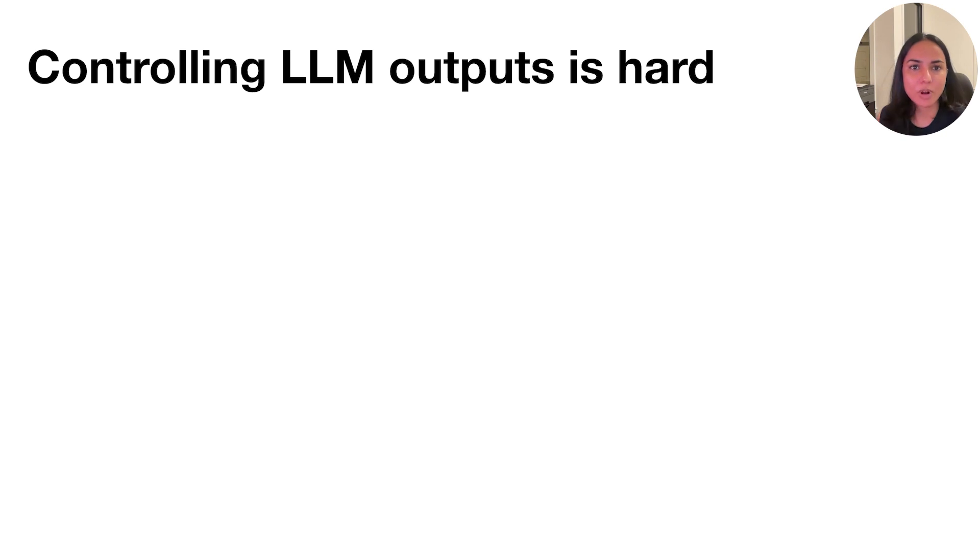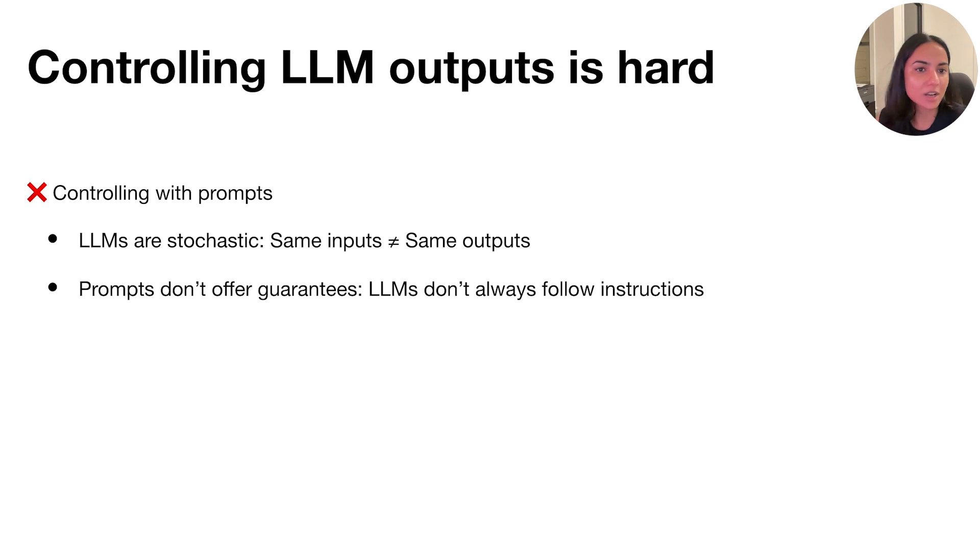Why is this problem challenging, and what are the common tools that developers use in order to control LLMs? The first one is using the prompt in order to make the LLM listen to directions or follow instructions, but this is problematic because LLMs are fundamentally stochastic, and this results in behavior where the same input may not guarantee the same output across multiple runs. Another issue with this is that a prompt doesn't offer any guarantees, so even if you request certain behavior in the prompt by asking an LLM to generate some output or to always avoid some output, LLMs don't always follow those instructions.